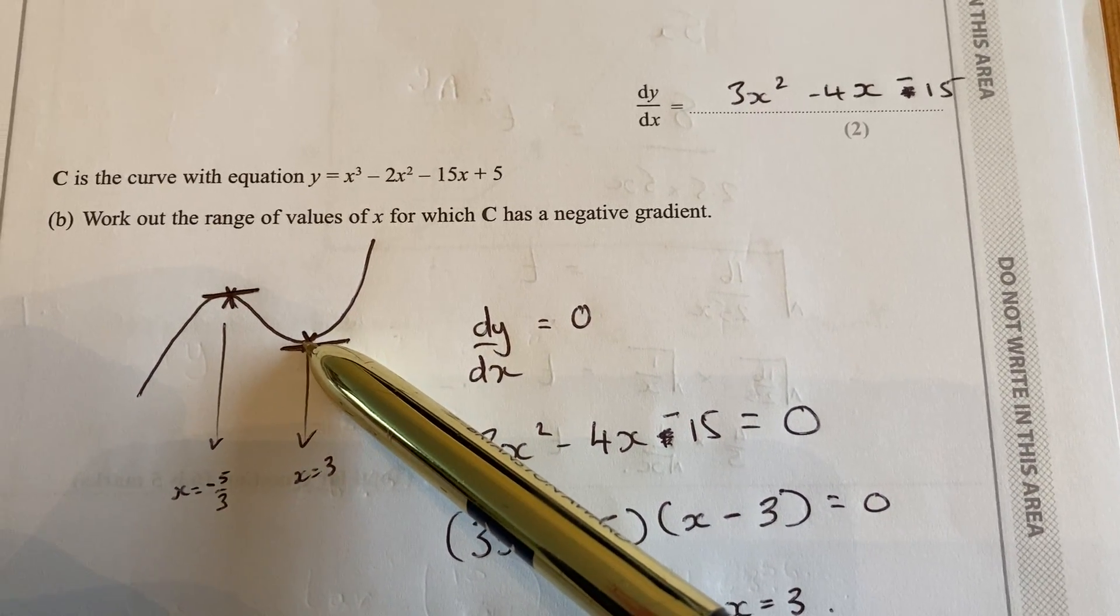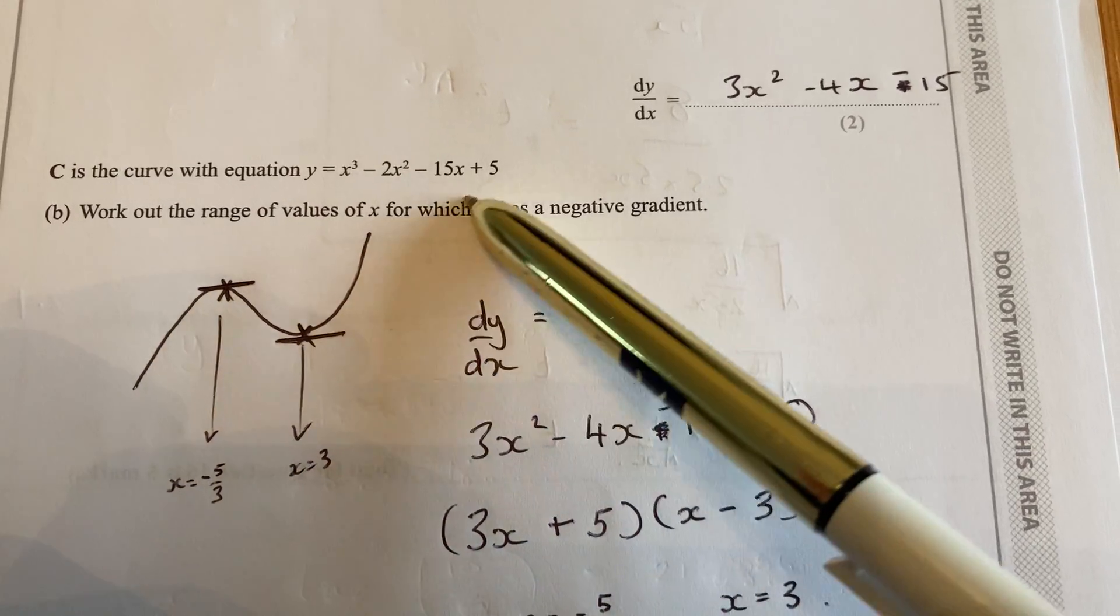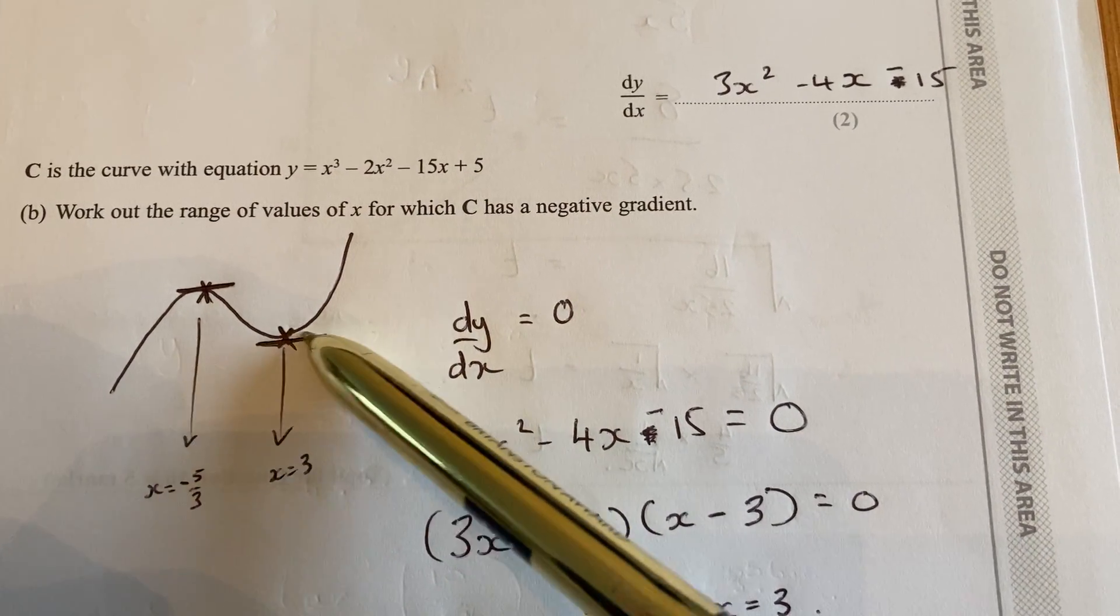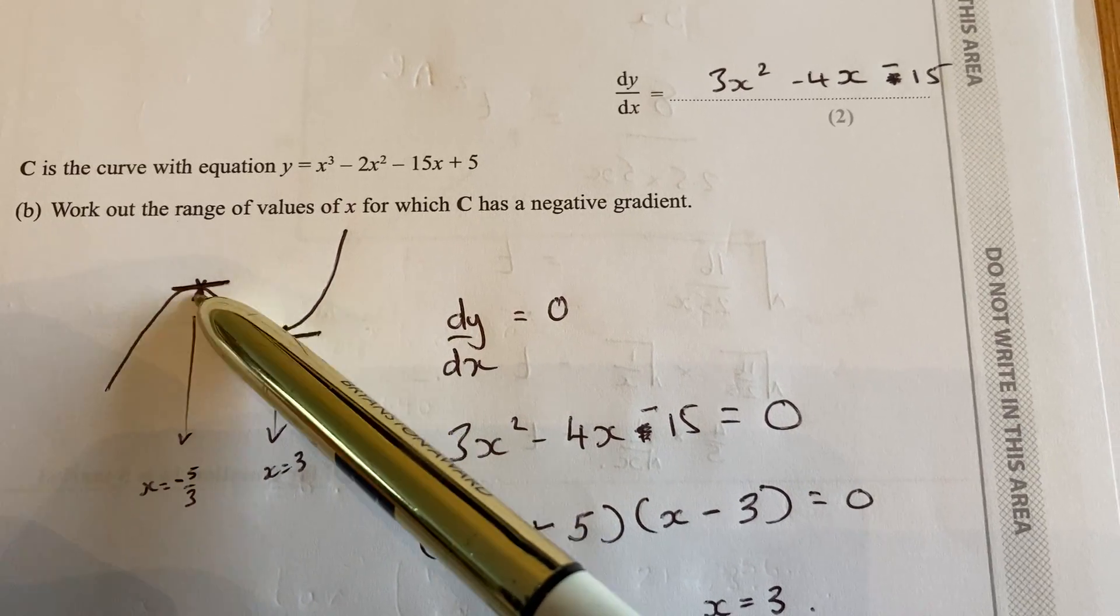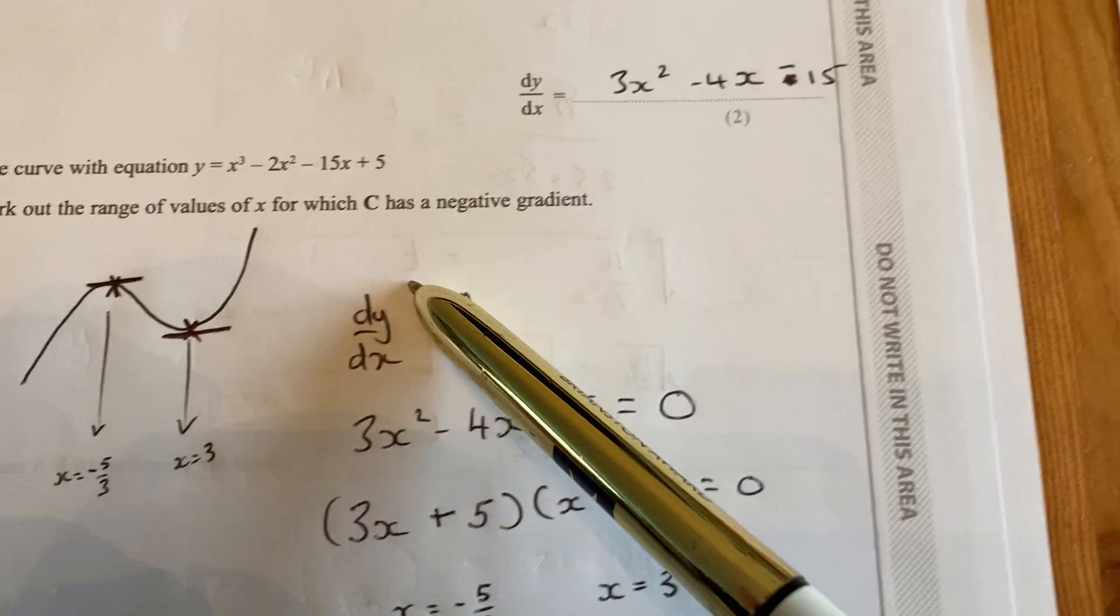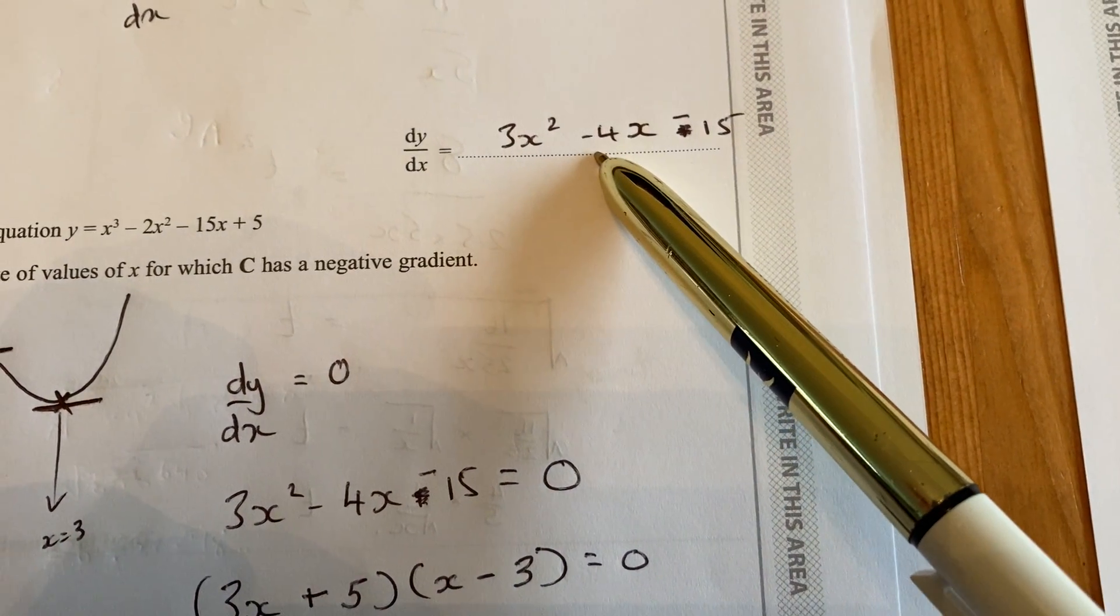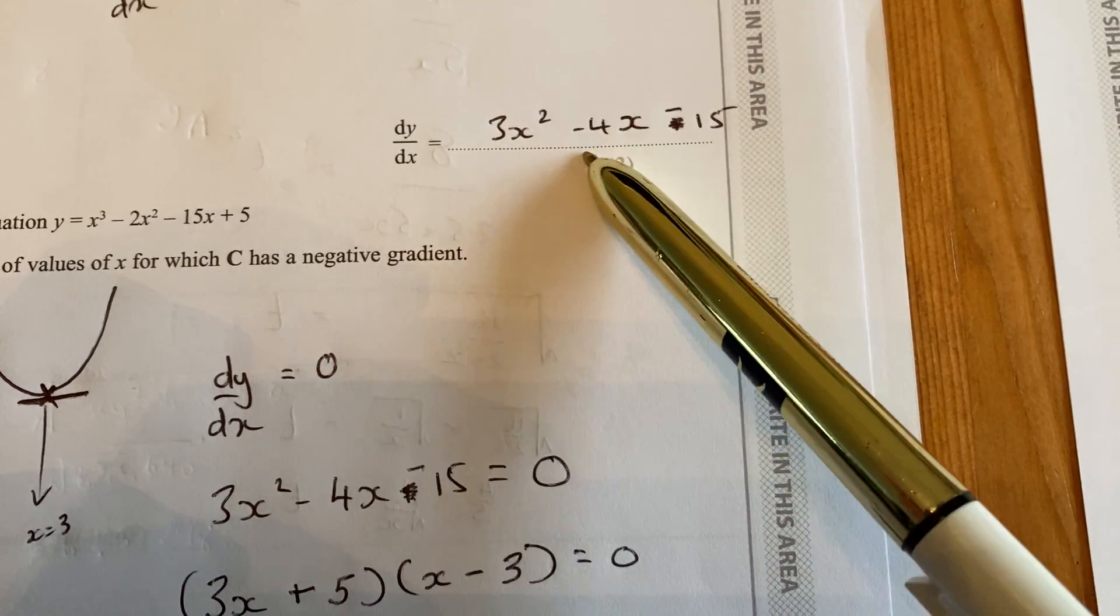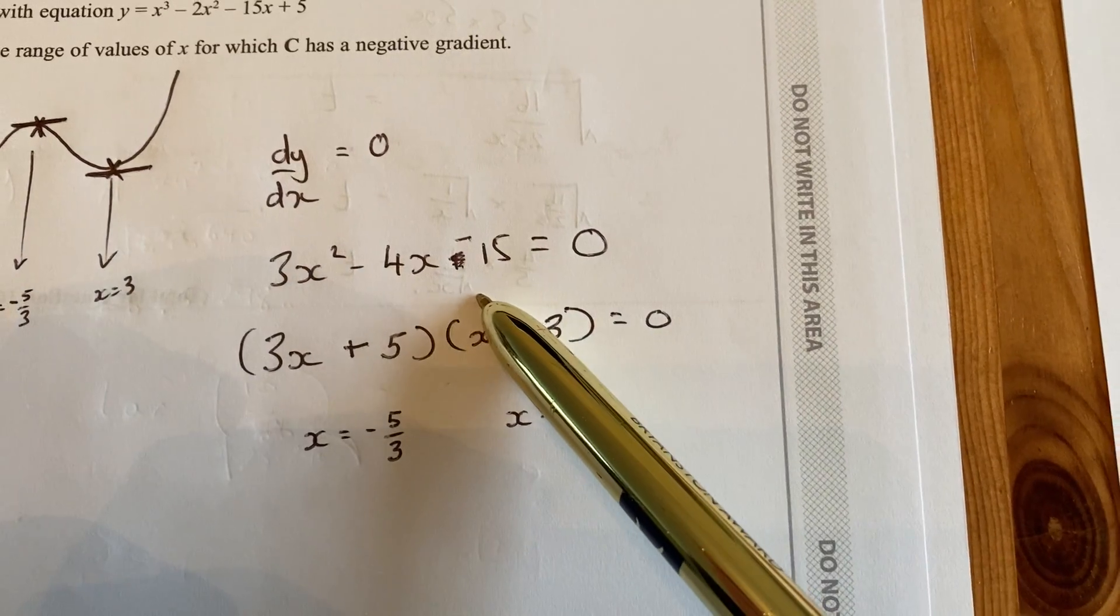So we can calculate those values using differentiation, if you remember, they're called stationary points. And what's special about them is where the gradient, or where dy by dx equals 0. So if I've got this equation for the gradient, or dy by dx, I need to put this equal to 0, which is what I've just done there.